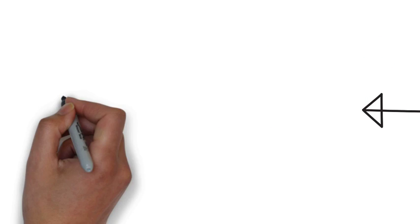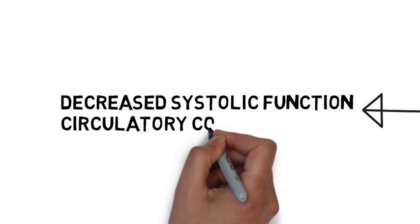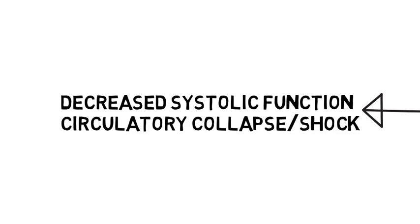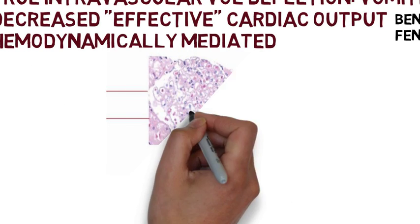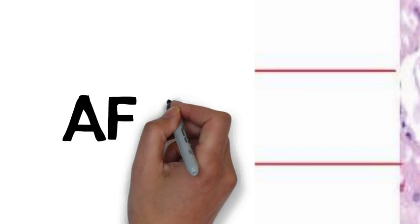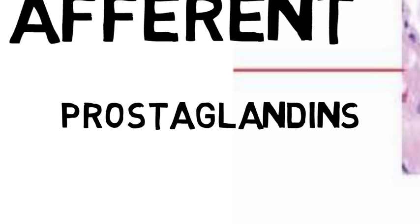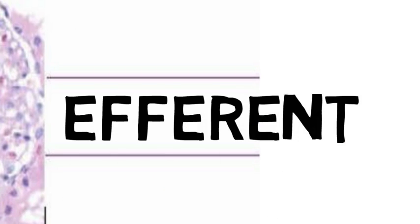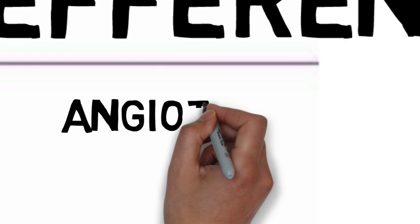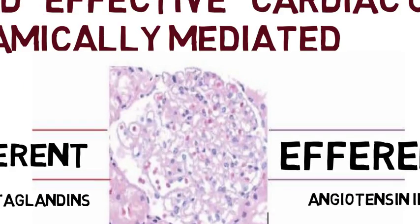Decreased effective volume can be due to a decrease in systolic function and a decrease in cardiac output, or to circulatory collapse with shock. Hemodynamically mediated pre-renal failure is illustrated through the glomerulus, where blood comes in via the afferent arteriole, which is under the influence primarily of prostaglandins under conditions that decrease afferent flow, or on the efferent side, things that cause angiotensin-dependent renal function, and then the tubules lead to urine production.